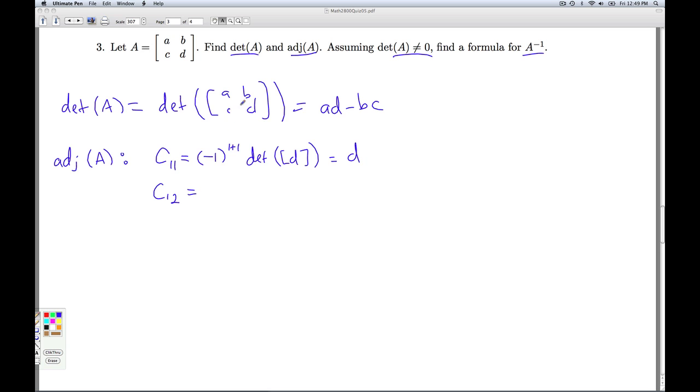C1,2 is negative 1 to the 1 plus 2 power times the determinant of what you get when you delete the first row, second column. That's C. So that gives me the opposite of C.